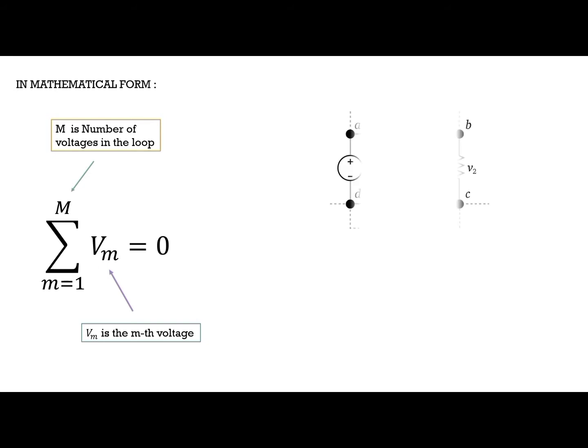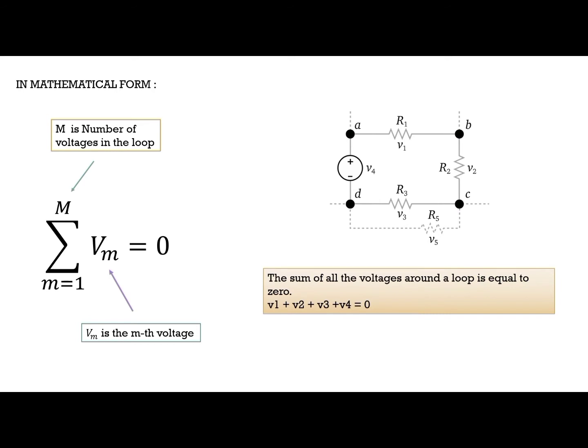This is the example of a circuit. We can see there are V1, V2, V3, and also V4. We can write a mathematical form. The sum of all the voltages around a loop is equal to zero. V1 plus V2 plus V3 plus V4 equal to zero.